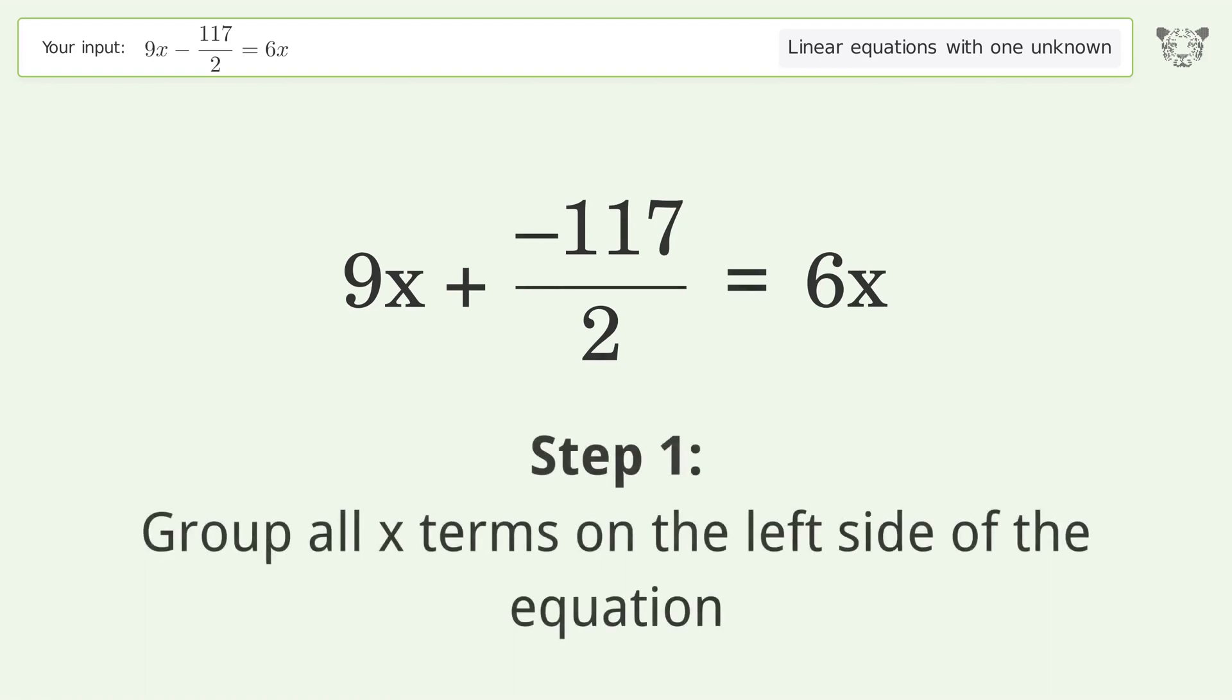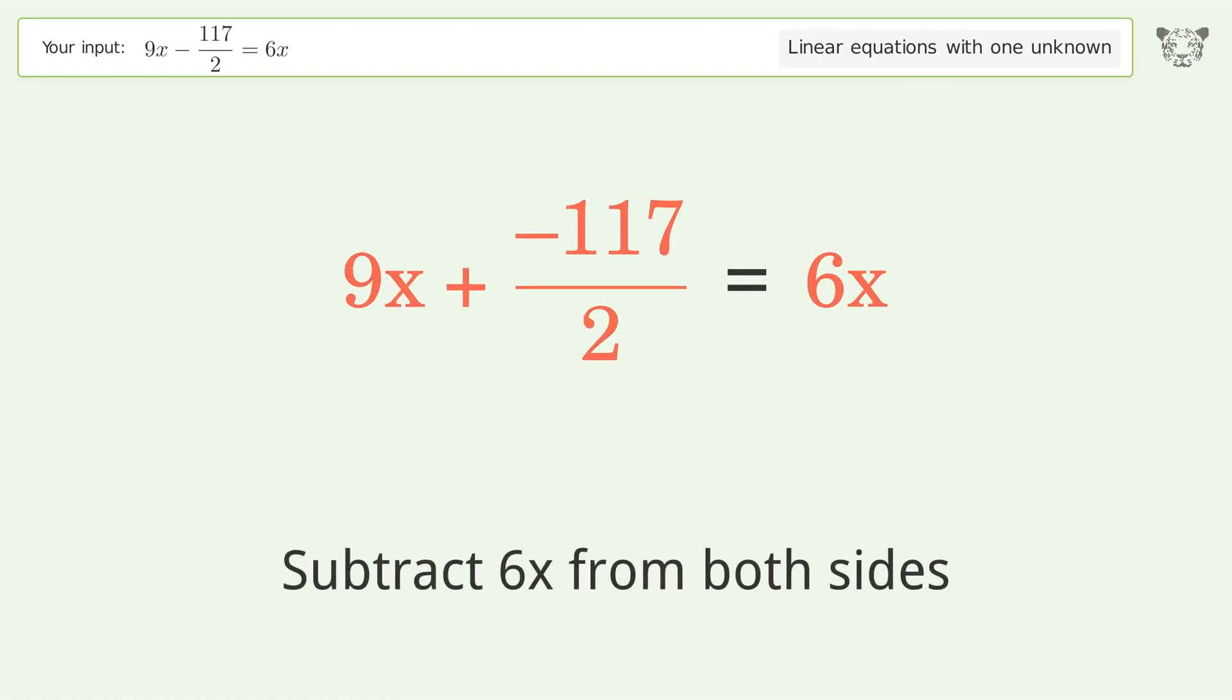Group all x terms on the left side of the equation. Subtract 6x from both sides.